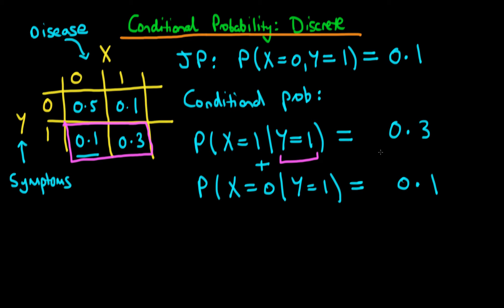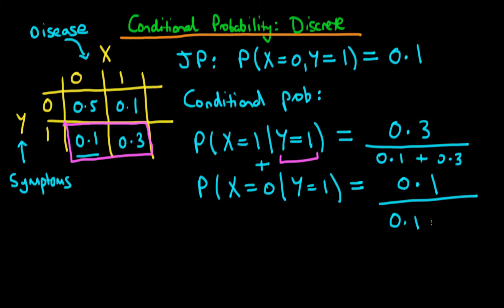The way we handle this is by normalising each of these values — normalising simply means we divide. We divide each outcome by the total probability of event Y occurring, in other words the marginal probability of actually being symptomatic, which is 0.1 plus 0.3 equals 0.4. So the top probability becomes 0.3 divided by 0.4, which simplifies to three quarters. The bottom probability becomes 0.1 divided by 0.4, which is one quarter. These two now sum to one, satisfying the conditions for a probability.